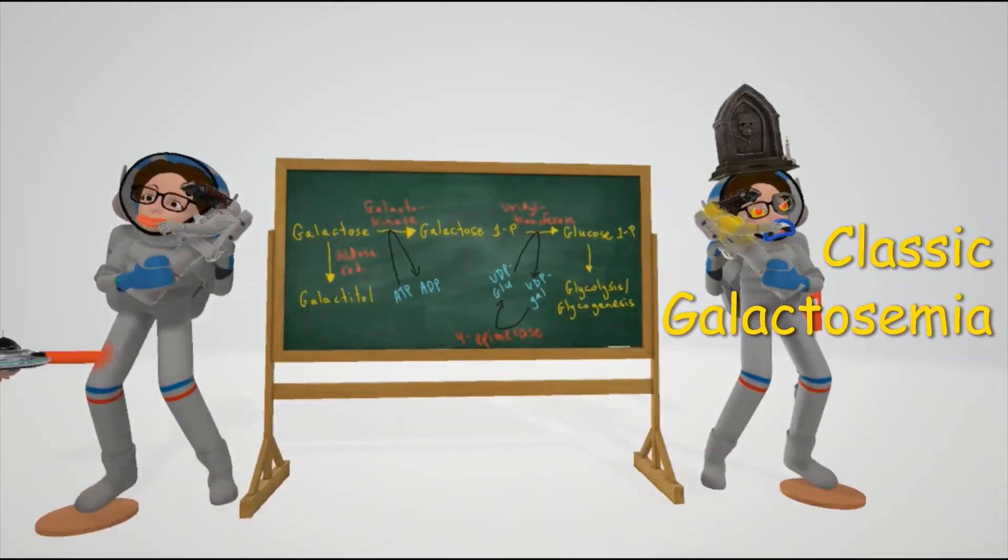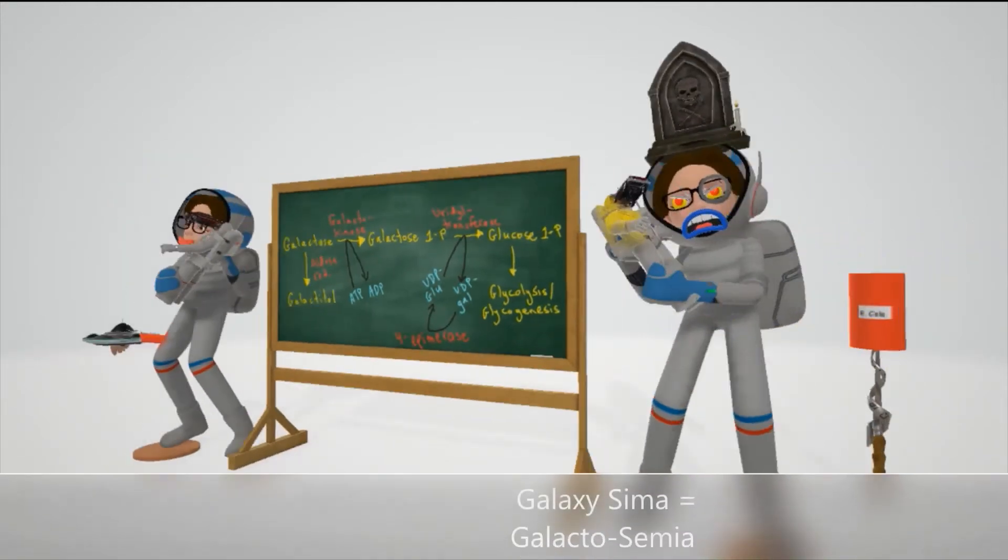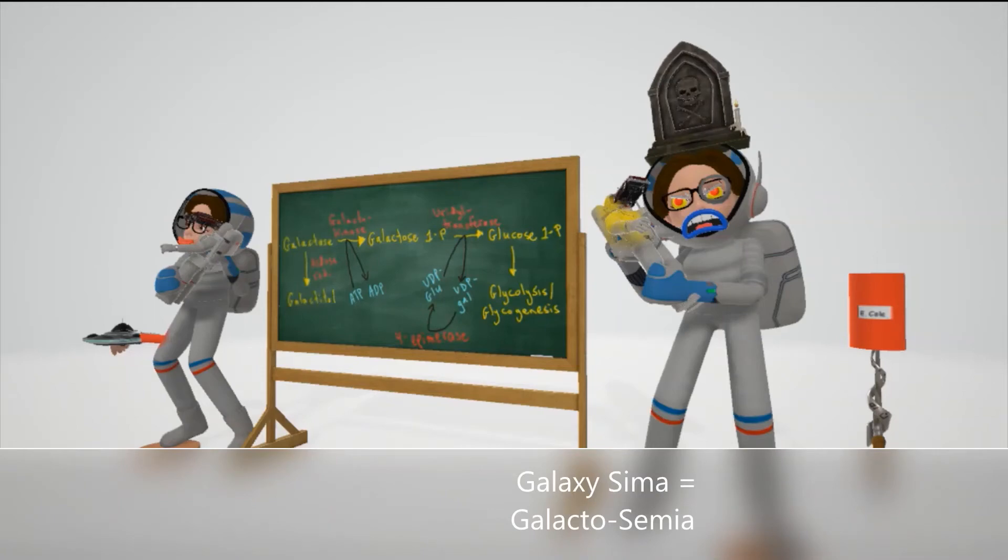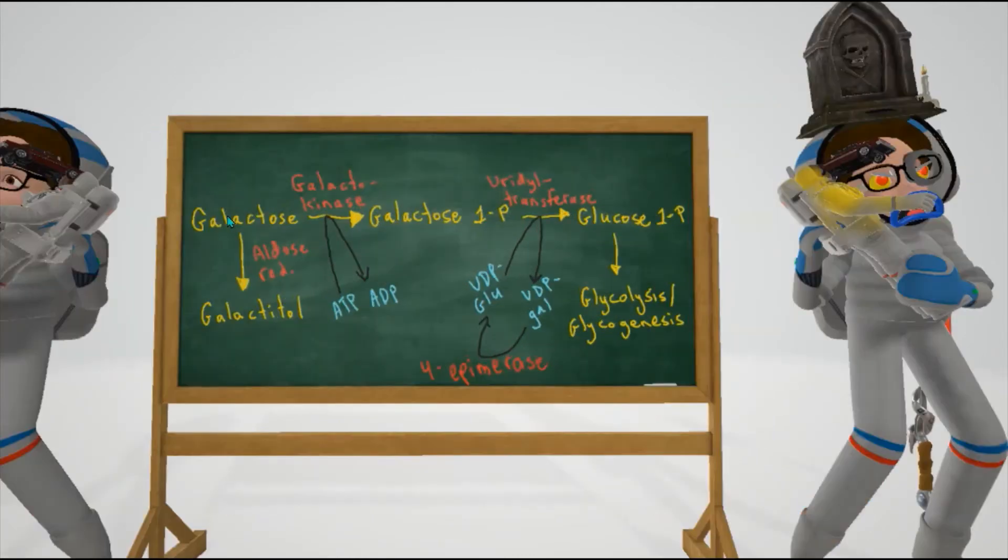Now our scene on classic galactosemia, represented by the teacher whose name is Galaxy Sima - Galaxy Sima for galactosemia. Before we discuss classic galactosemia, let's quickly review galactose metabolism. Normally, galactose is converted to galactose 1-phosphate, which is